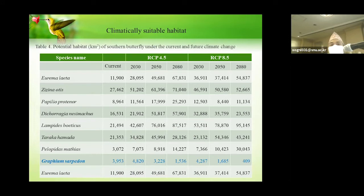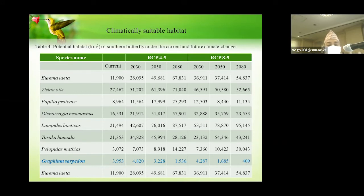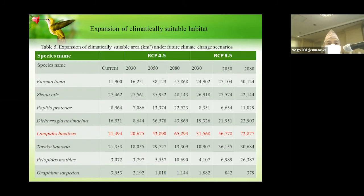We first calculated the climatically suitable habitat. Among the eight species, seven species retain the current habitat with expansion of more habitat in the future. The table shows projections from current through 2030, 2050, and 2080 under both RCP scenarios 4.5 and 8.5. However, one species, Graphium sarpedon, will lose habitat in the future, which could be an effect of climate change requiring further study. Lampides boeticus would expand the most, showing the highest habitat expansion among all species.